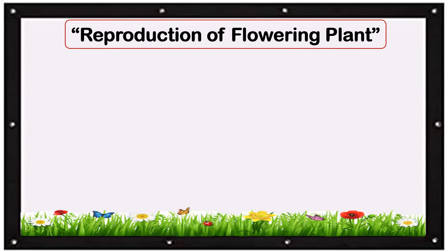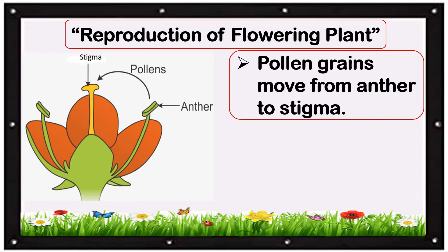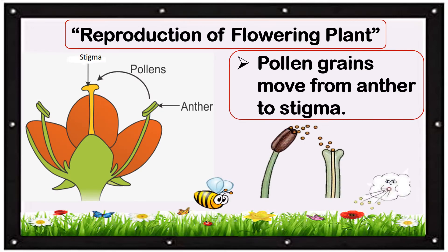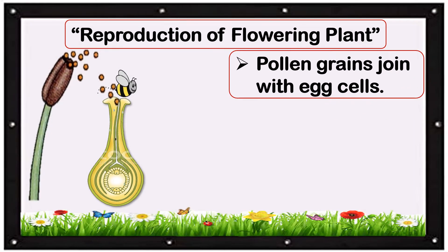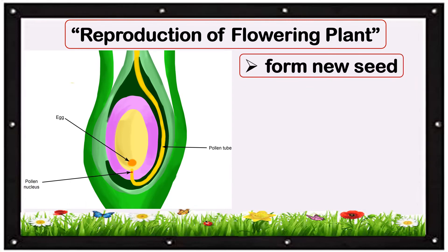This time, we have the reproduction of flowering plants. The pollen grains move from the anther to the stigma — by how? Through the wind or through insects; they transfer the pollen grains to the stigma. And then the pollen grains will join with the egg cells inside the ovary. When the egg cells and the pollen grains have united or fertilized, it will form into a new seed.